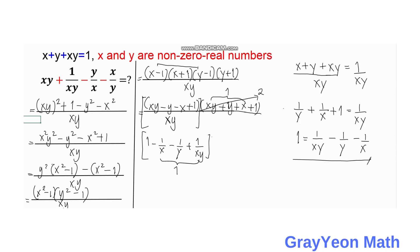So we found that 1 over xy minus 1 over x minus 1 over y equals 1. Adding this to the earlier result, this portion becomes 2. We had 2 from before, and this portion is also 2, so 2 times 2 gives us our answer of 4.